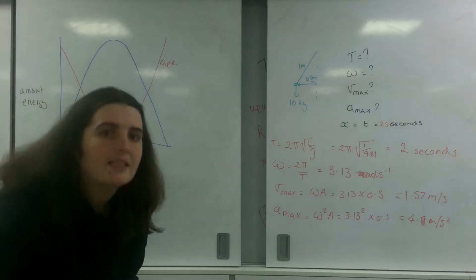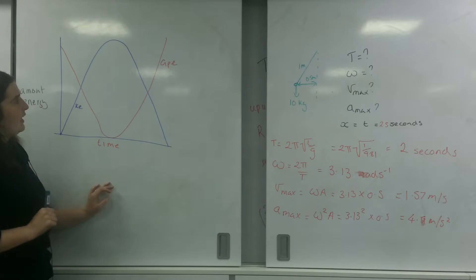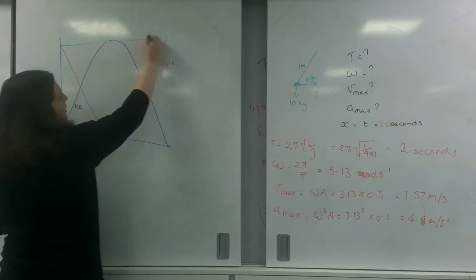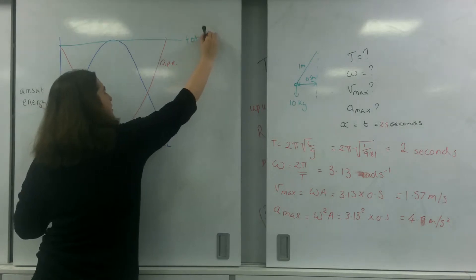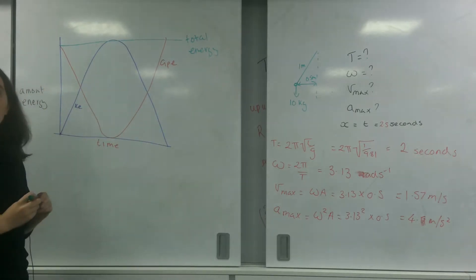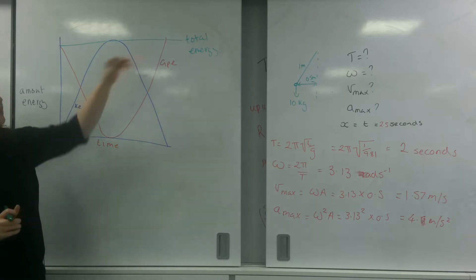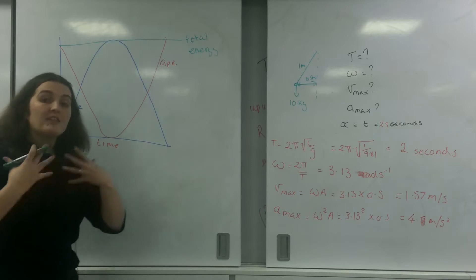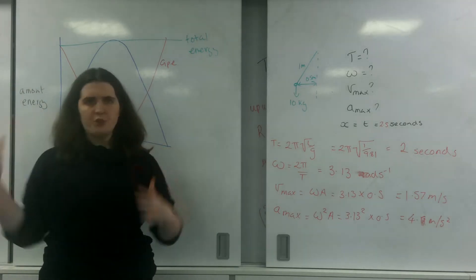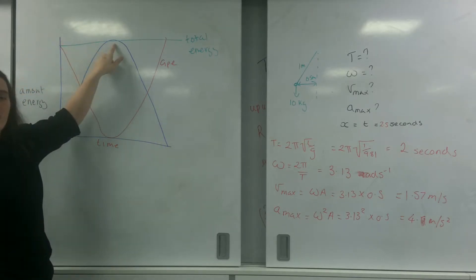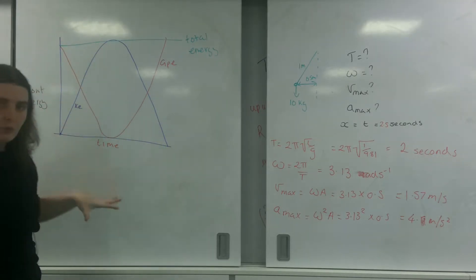Now, my total energy in this system, at any point in time, if I added all these points, would be that, because at any point I have this much energy. So if I said this was 10 joules, at any point I will have 10 joules worth of energy. It might just be GPE, it might just be KE, or it might be a mix of both.